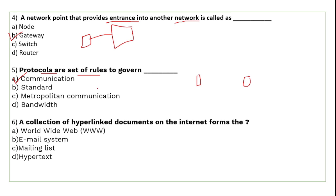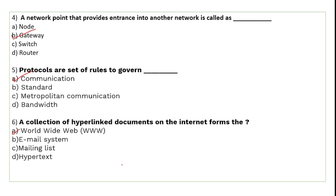A collection of hyperlinked documents on the internet forms the World Wide Web. The World Wide Web is the web of information available on the internet. It consists of hyperlinked documents, meaning documents that are linked to one another.